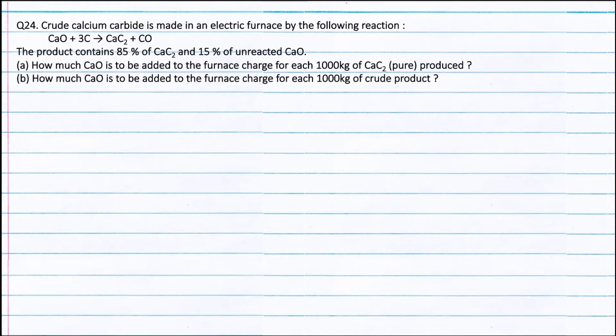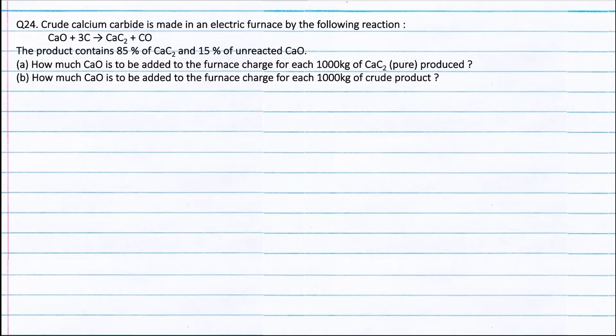Part A: How much calcium oxide is to be added to the furnace charge for each 1000 kg of calcium carbide pure produced? Part B: How much calcium oxide is to be added to the furnace charge for each 1000 kg of crude product? The equation is calcium oxide plus 3 moles of carbon forming calcium carbide plus carbon monoxide.